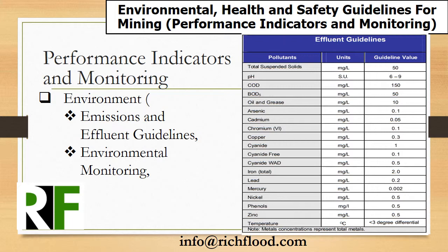Looking at performance indicators and monitoring, there is a chart showing emissions and effluent guidelines — laboratory parameters that have to be monitored. You have the SI units and the guideline value, which is the limit that should not be exceeded. For total suspended solids, 50 milligrams per liter should not be exceeded. For COD, 150 milligrams per liter. For lead, it should not exceed 0.2 milligrams per liter.